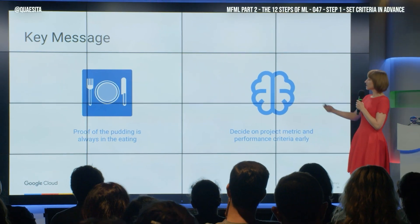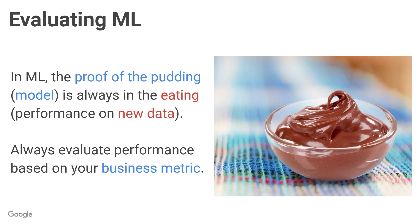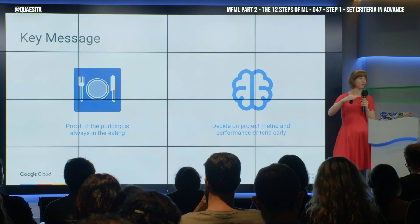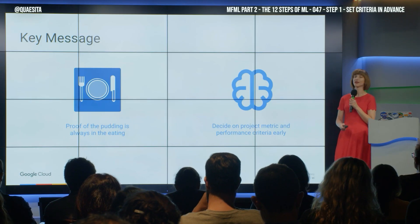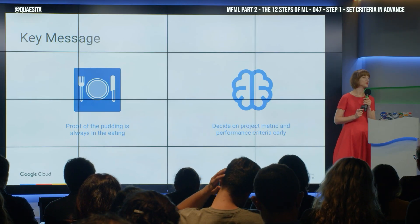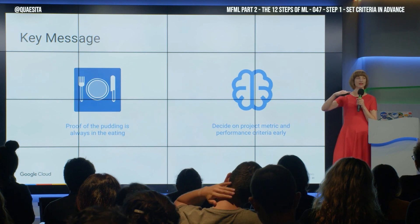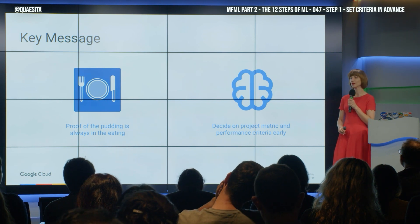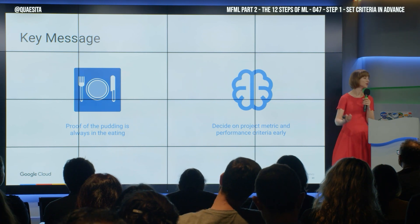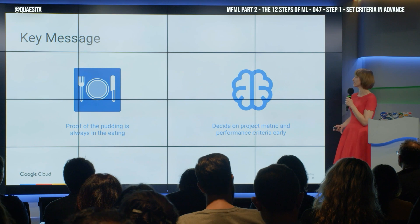Key message: the proof of the pudding for machine learning is always in the eating. You have to figure out how you do the proving up front. Decide on how you're going to measure success and set that cold, hard minimum early, so you don't bargain yourself into releasing rubbish.